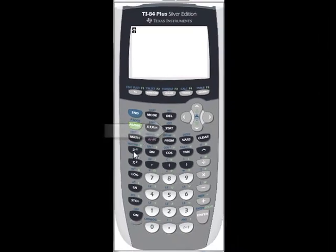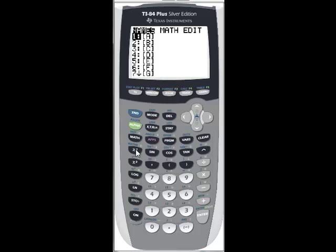So we go second, matrix, and here's all our matrices. The first thing we're going to do is edit. So we're going to go over to edit. First one we'll edit as A, and we'll put our coefficient matrix in as A, which is a 2 by 2 matrix. So we need to give it the right size, 2 by 2.